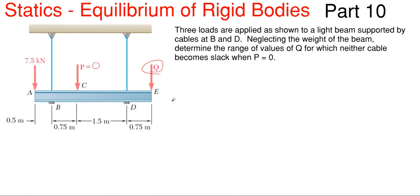So basically we need to find a range of Q that does not cause these cables to not be in tension because cables can't be in compression. So we need to find a range for Q in which both of these cables, these reactionary supports, are still in tension.